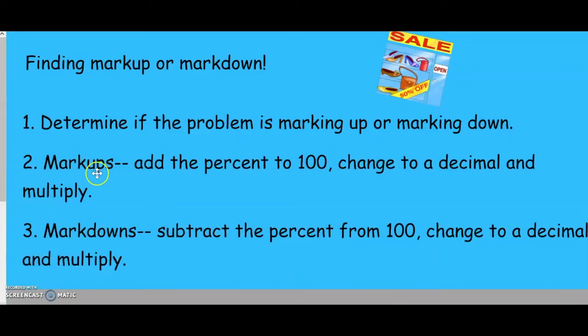The first thing you need to do is to determine if the problem is marking up or marking down. If it is marking up, you're going to add the percent to 100, change it to a decimal, and then multiply. If it's marking down, you're going to subtract the percent from 100, change it to a decimal, and multiply.